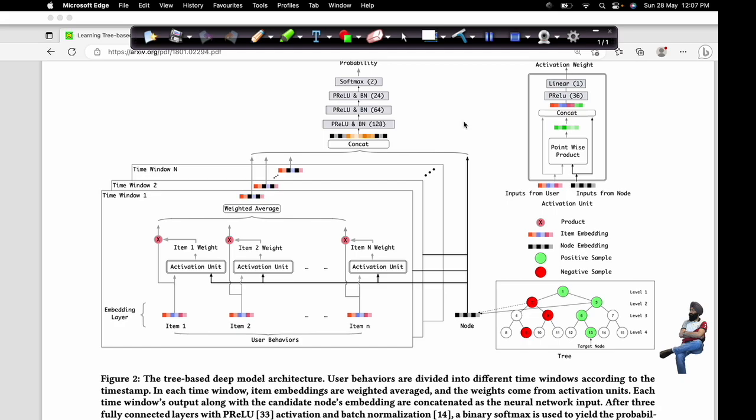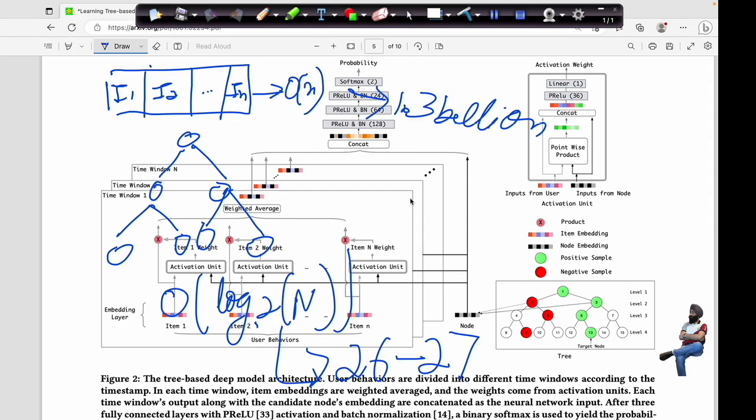To begin with, these are the tree-based models used by Alibaba in their recommendation engine. What is special about these tree-based models is they are using a max heap kind of structure. What they are doing is they are encoding all the products into their leaf nodes.